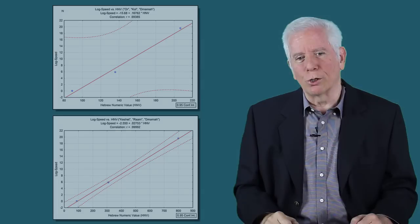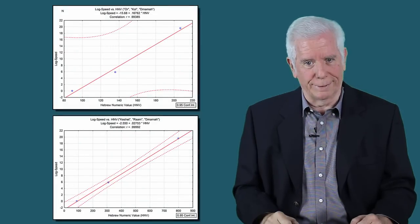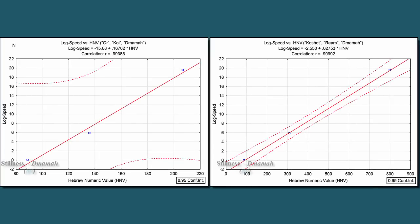On the vertical axis, we mark the speed of light, the speed of sound, and speed of zero, no movement, again on a log scale. Here are the plots of these two trios of words. Obviously, the points are aligned on a straight line.